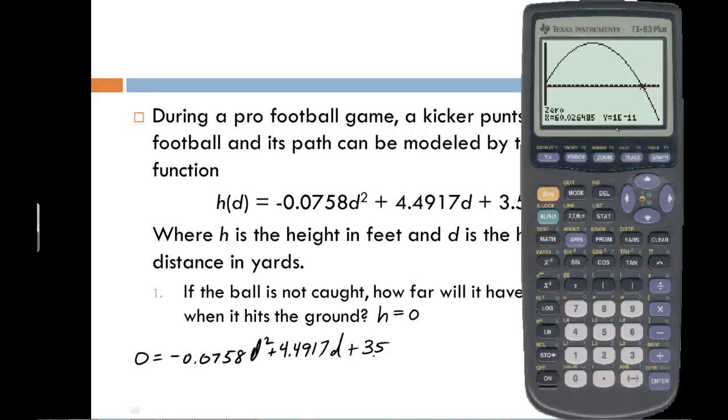If you ever see a capital E followed by a large negative number, the calculator is just telling you that this is zero. So it's at a height of zero feet when it has traveled 60.03 yards.